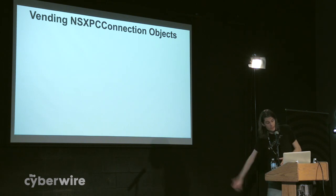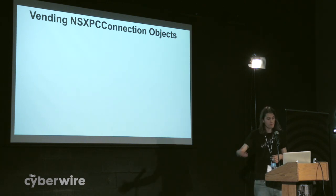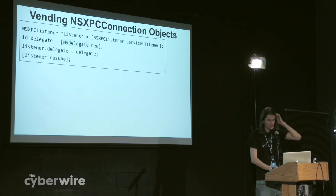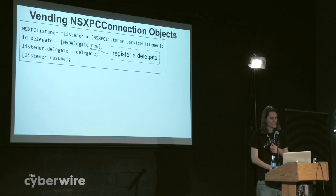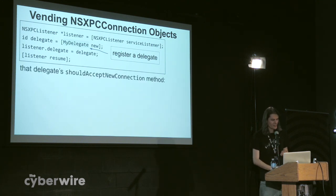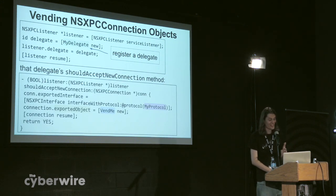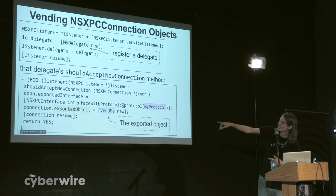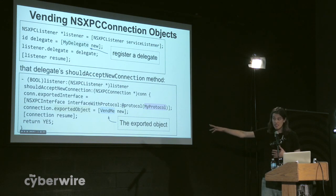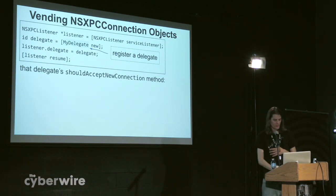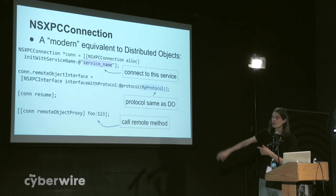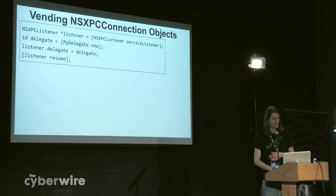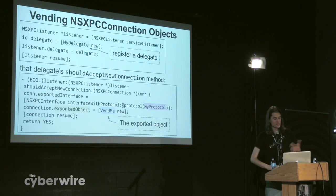On the server side, to vend an object using an NSXPCConnection, you have this convoluted code where you declare a delegate, and in that delegate's acceptNewConnection you accept a connection and then export an object. Eventually, what this really means is you can export the VendMe object again, and then client code will be able to call the foo method. This is implemented in CoreFoundation, I think.